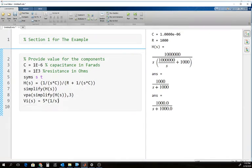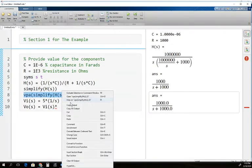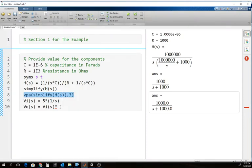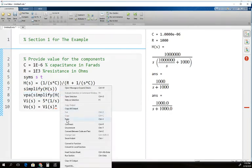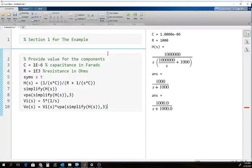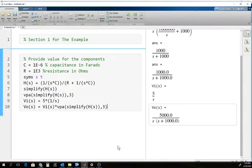The output then is V_out. I'm going to copy the whole simplify portion. You don't have to do it that way—you could just type HS—but it will just make things look a little nicer. I'm going to run this section again. There we get our output. Our output is 5,000 over s times the quantity s plus 1,000.